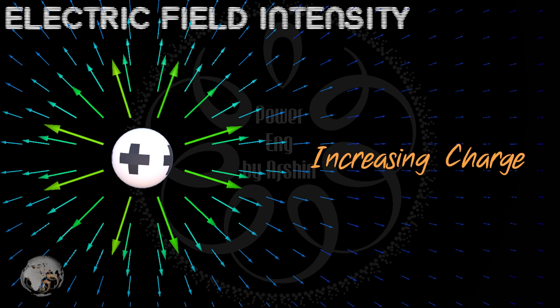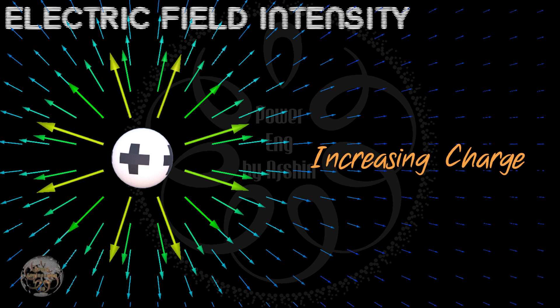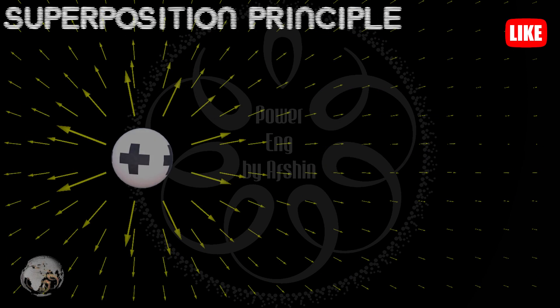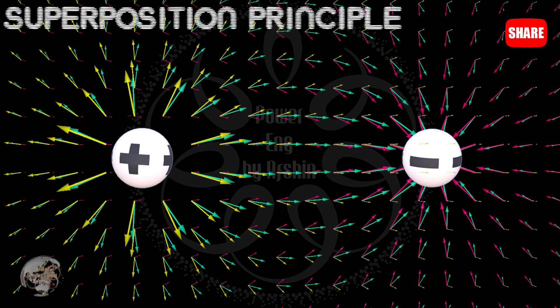The larger the electric charge, the stronger the field and vice versa. Now, if two charges are placed close to each other, the electric field around them is determined by the vector sum of the fields produced by each charge.